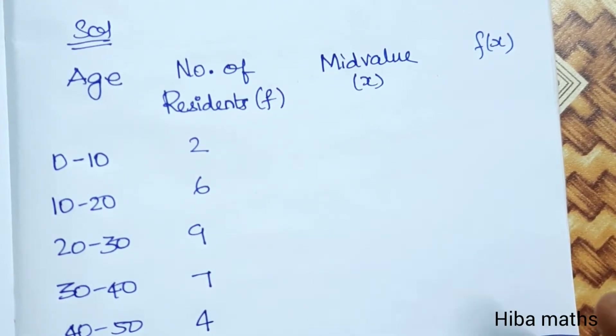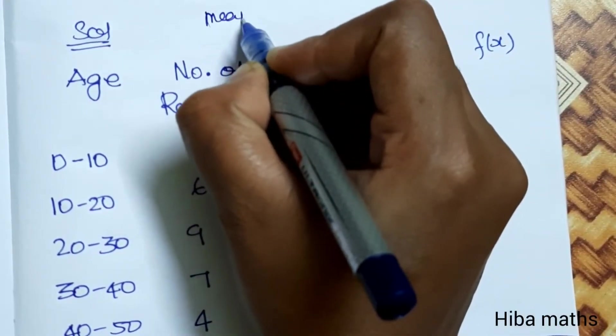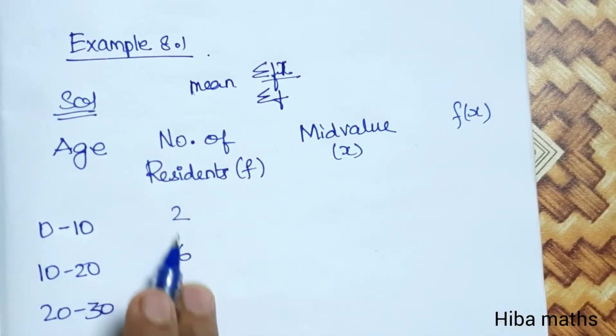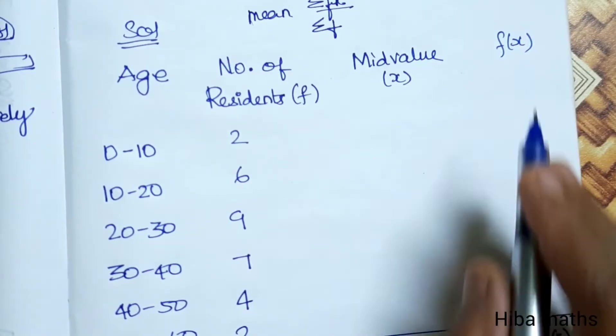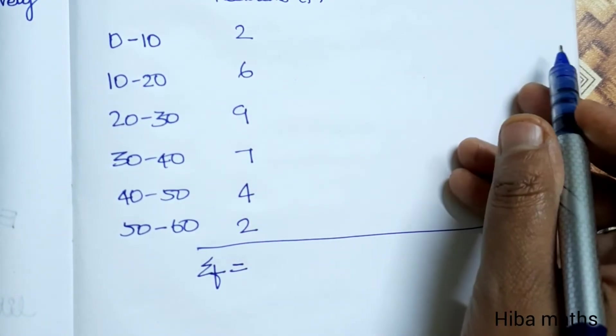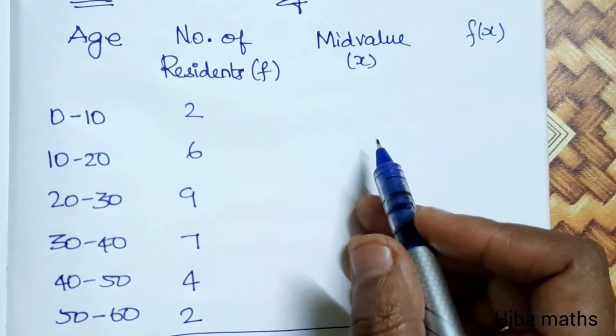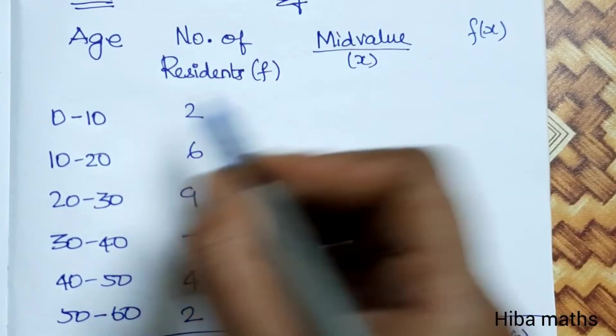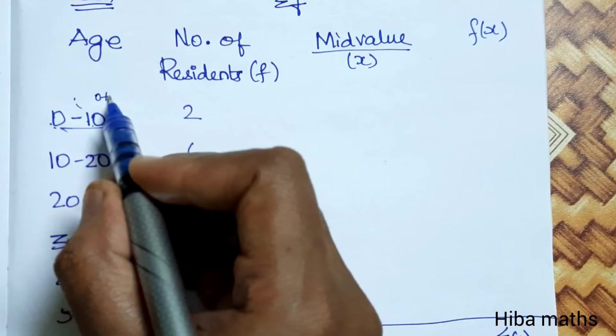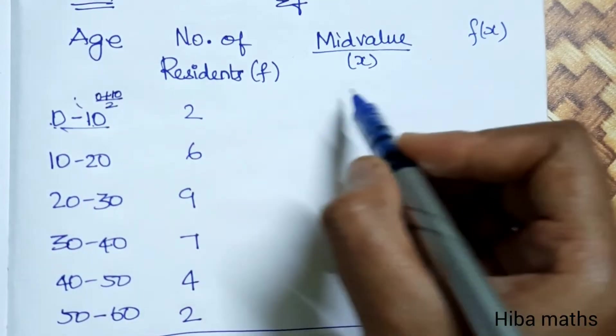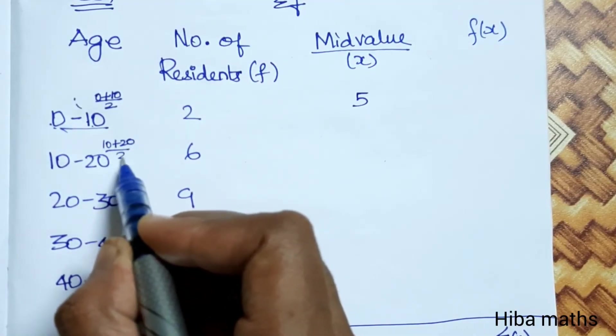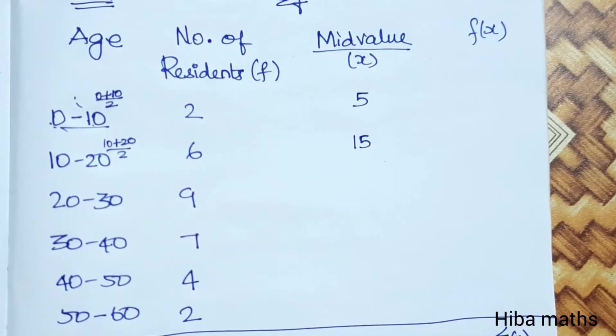We need to write the midvalues. Midvalue is 0 plus 10 divided by 2, which is 5. 10 plus 20 is 30, divided by 2 is 15. 20 plus 30 is 50, divided by 2 is 25.